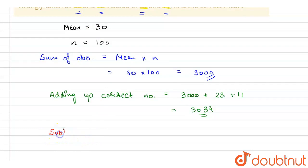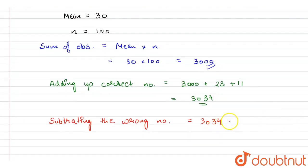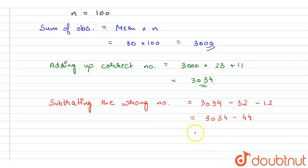So subtracting the wrong numbers, that will be equal to 3034 minus 32 minus 12. This will be equal to 3034 minus 44. So this will come out to be equal to 2990.